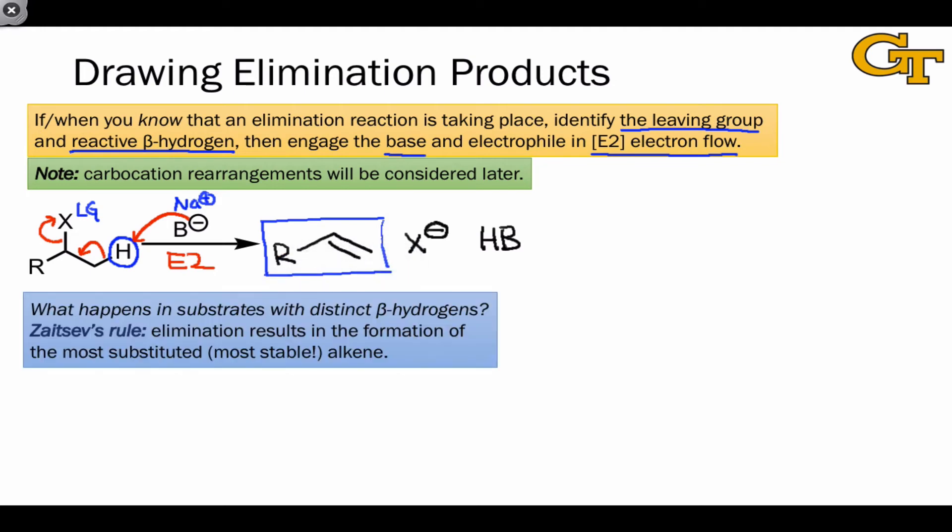Let's revisit this question of what happens in substrates with distinct beta hydrogens. Well, the rule here is that elimination results in the formation of the most substituted alkene. This is usually how the so-called Zaitsev's rule is stated: elimination is selective for the most substituted alkene. But the reason for this—the underlying reason—is that the most substituted alkene is the most thermodynamically stable product.